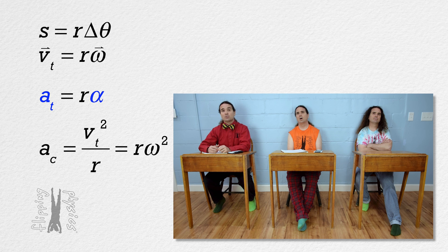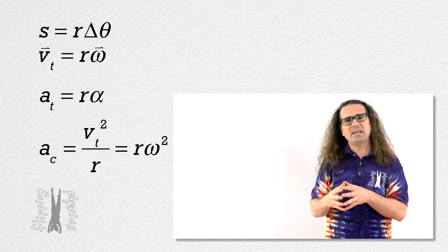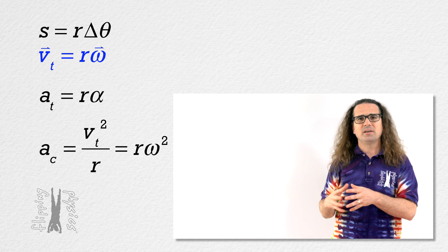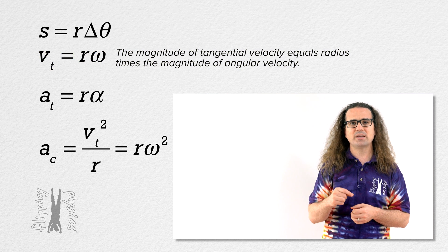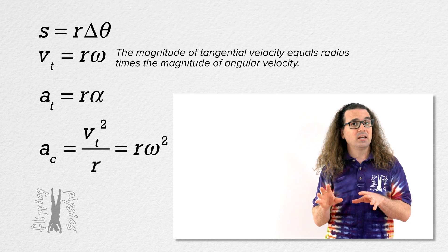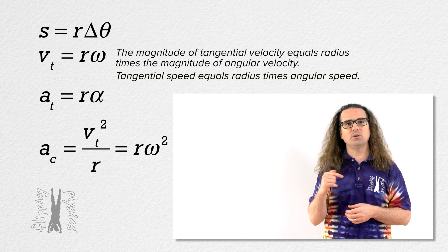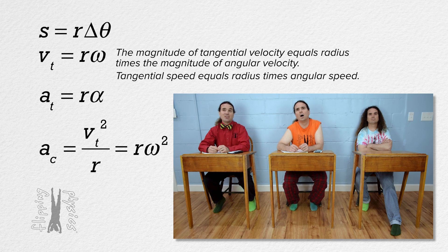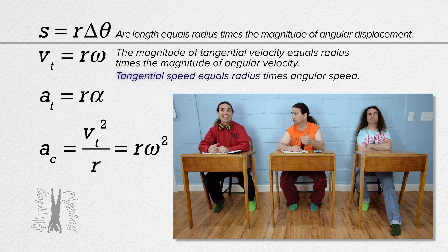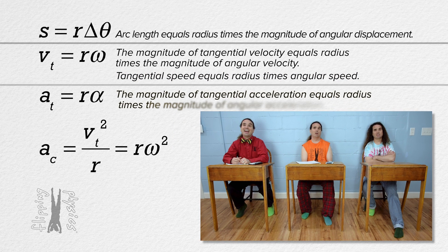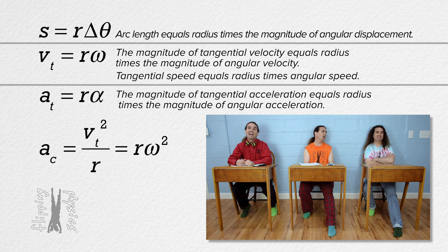And that is also true for centripetal acceleration, tangential velocity, and angular velocity. But then, how do we say these equations? Very nice, Bobby and Bo. The way we say v sub t equals r times omega is — it does not have vector symbols on it — we say the magnitude of tangential velocity equals radius times the magnitude of angular velocity. Alternatively, it could also be read as tangential speed equals radius times angular speed. So all of these equations refer to the magnitudes of the vectors: arc length equals radius times the magnitude of angular displacement, tangential speed equals radius times angular speed, and the magnitude of tangential acceleration equals radius times the magnitude of angular acceleration.